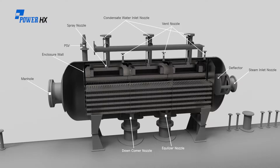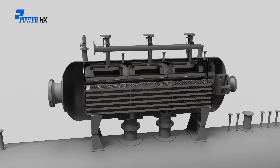Water inside the de-aerator flows through the tub, distributor, and tray in order. Water is sprayed through the spray valve, then steam is slowly injected.